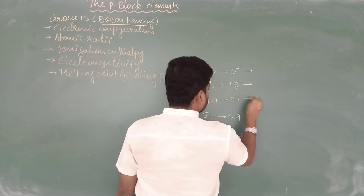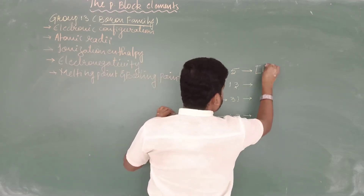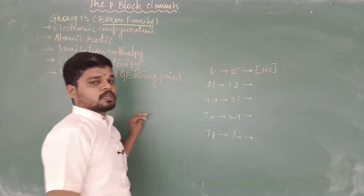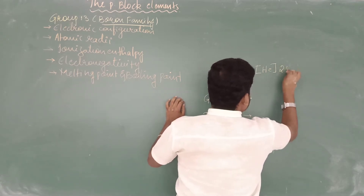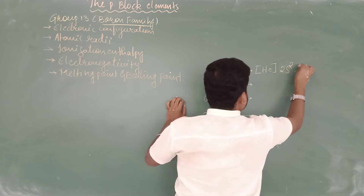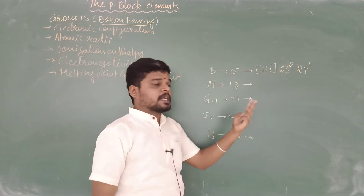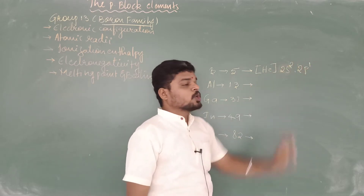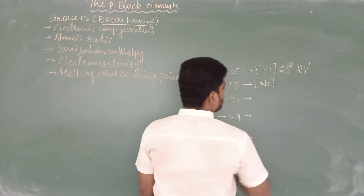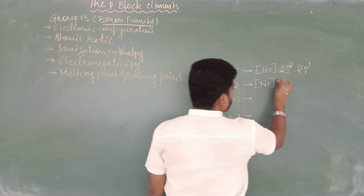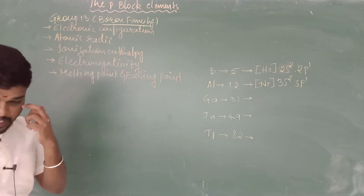Let's write the electronic configurations of group 13 elements using the preceding noble gas notation. For boron, the nearest noble gas is helium with atomic number 2, so we have 3 remaining electrons filled as 2s² 2p¹. For aluminium, the nearest noble gas is neon with atomic number 10, giving us 3 electrons as 3s² 3p¹.